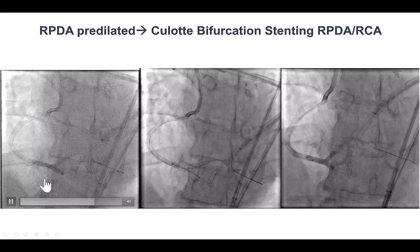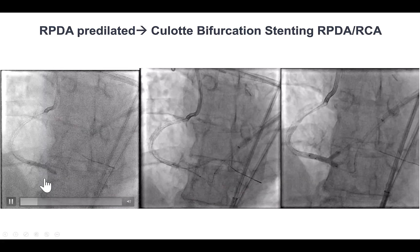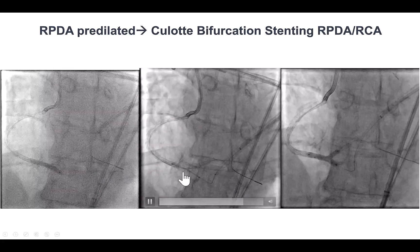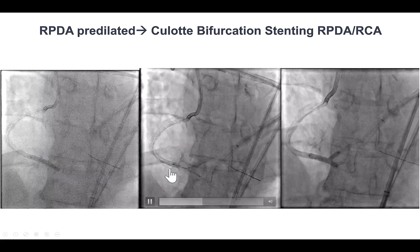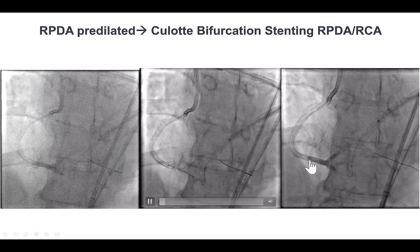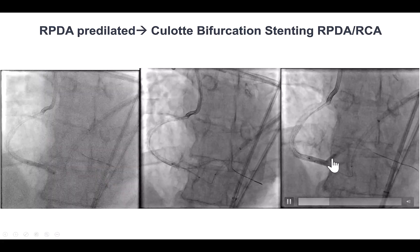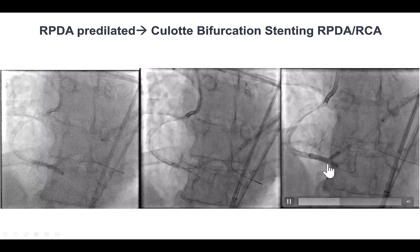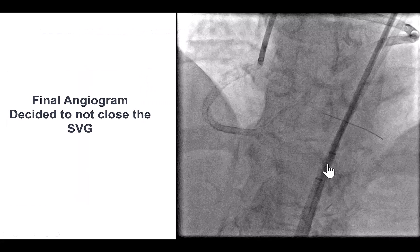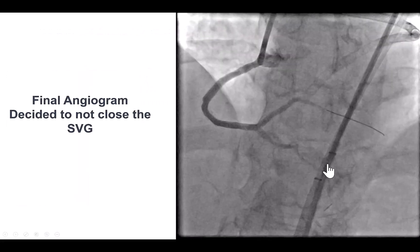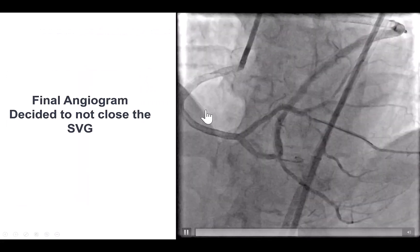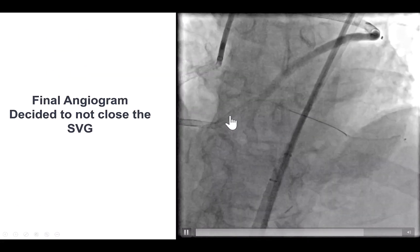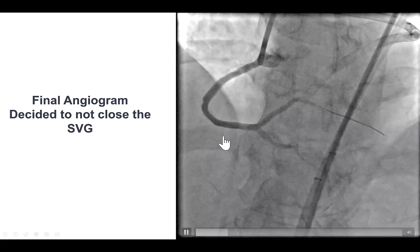We knew we had the PK papyrus, so we wanted to put a second stent. A stent was placed from the distal RCA into the PDA, followed by kissing balloon inflation. The final result showed good flow both into the posterolateral and the PDA.